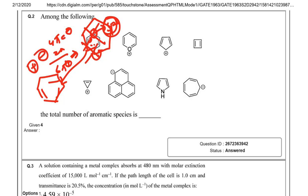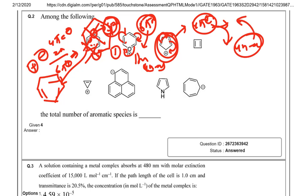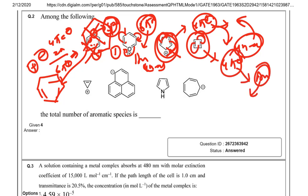The second structure has three double bonds in a planar ring, giving six pi electrons following Hückel's 4n+2 rule, so it is aromatic. The third structure has four pi electrons delocalizing with a positive charge — it is anti-aromatic because it does not follow the 4n+2 pi electron rule. The fourth structure also has four pi electrons in delocalization, following the 4n rule, making it anti-aromatic.